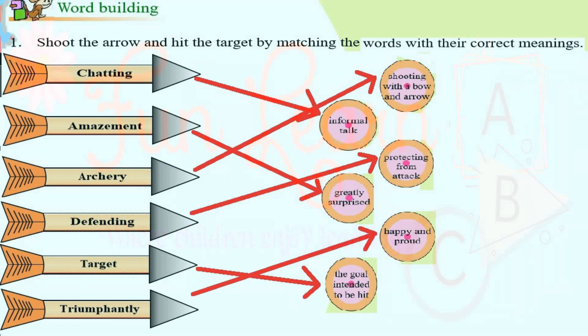Word matching exercise: 'Chatting' means informal talk. 'Amazement' means greatly surprised. 'Archery' means shooting with bow and arrow. 'Defending' means protecting from attack. 'Target' means the goal intended to be hit. 'Triumphantly' means happy and proud.